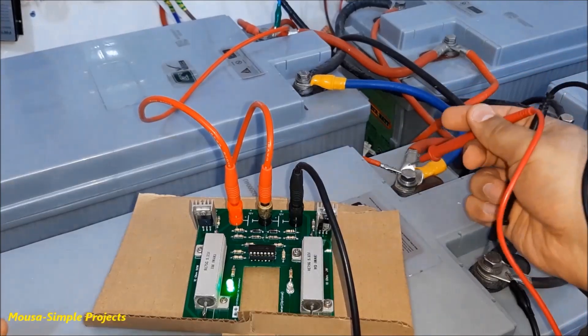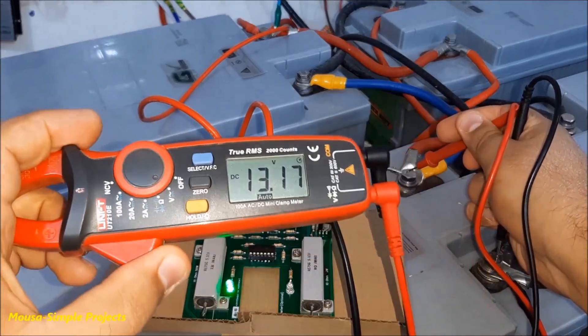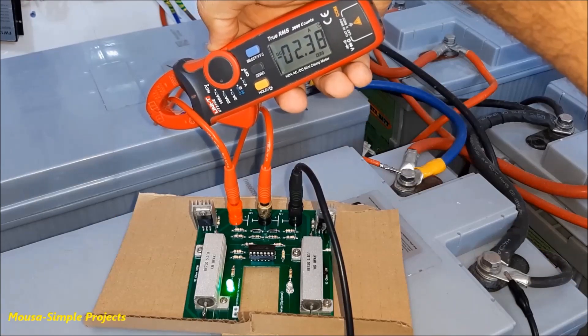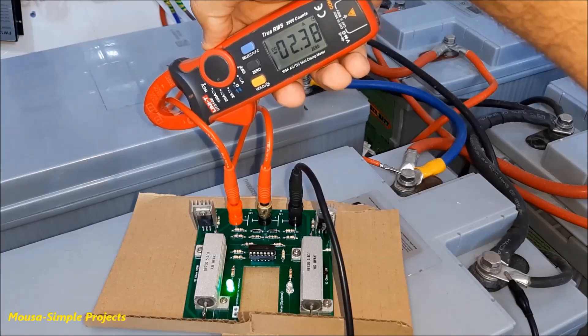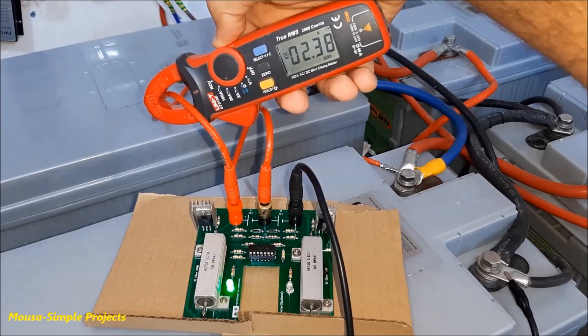After making sure that the circuit is working well, I connected it to my solar batteries. And as you can see, it starts drawing current from the battery that has higher voltage to discharge it.